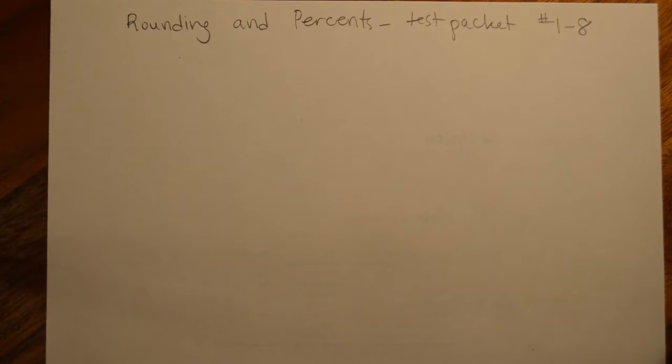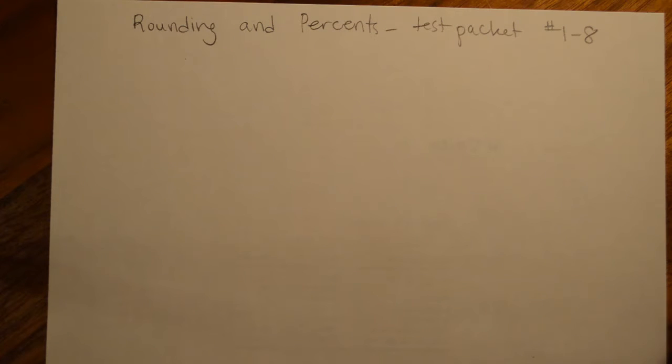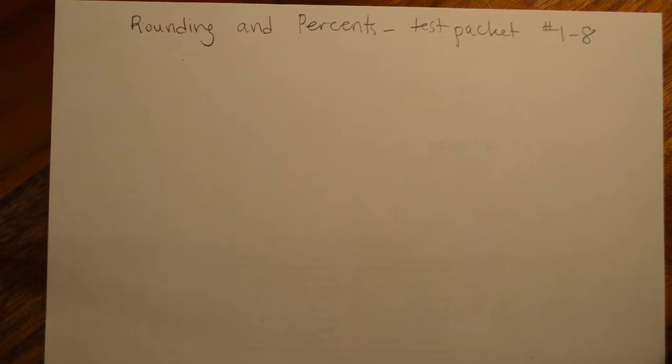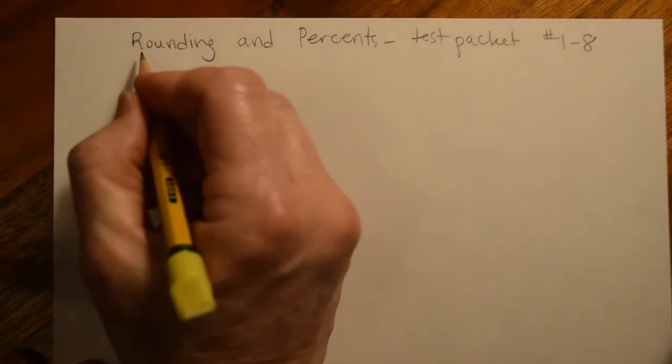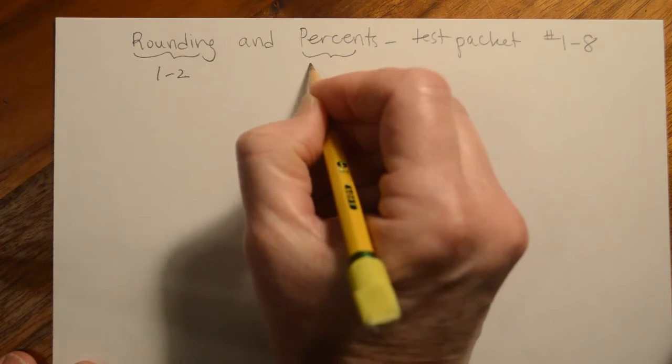Hey guys, I wanted to talk to you about rounding numbers and percents. Both of these end up in the test packet as problems one through eight. These are things that we really have not spent a whole lot of time talking about. You've seen rounding before, you've seen percents, but our discussions of them have not been formal. So I want to talk to you about rounding first. Rounding is going to be problems one and two, and then the percents is going to be problems three through eight.